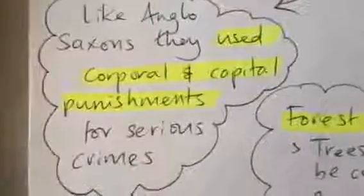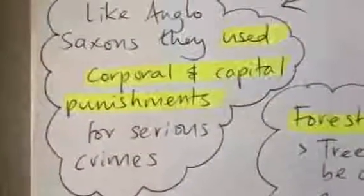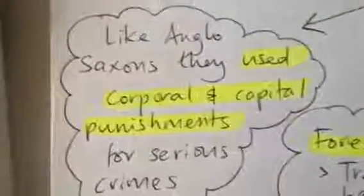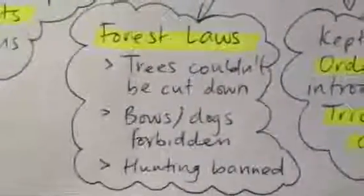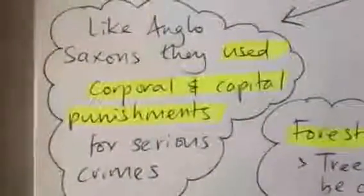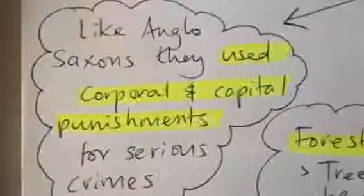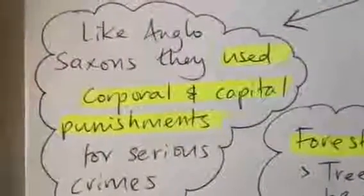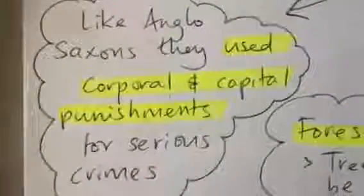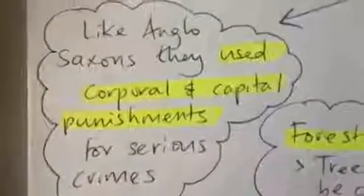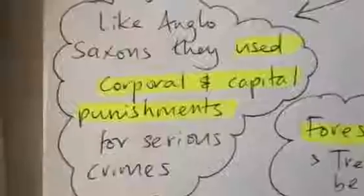Like the Anglo-Saxons, they used corporal and capital punishments for serious crimes. So that's a big chunk of continuity. If you think about that as a big change, there's a big chunk of continuity for you. And they kept corporal punishment. They kept the same kind of punishments like mutilation, stocks, pillory, whipping, that kind of thing. And obviously, they kept hanging and beheading as their capital punishment. So there's no change there.